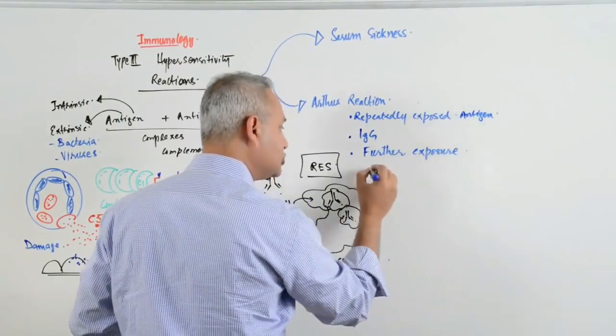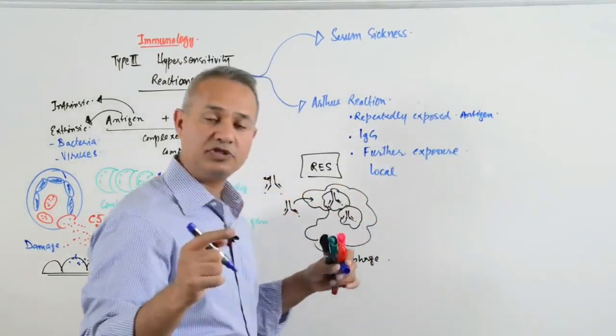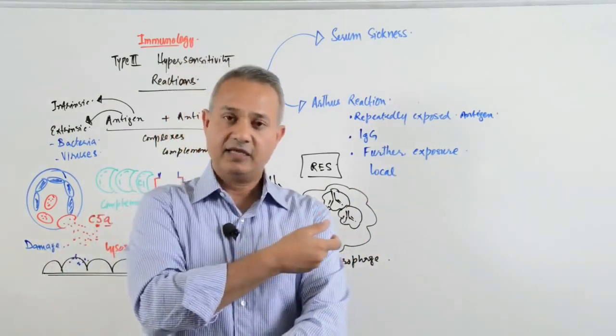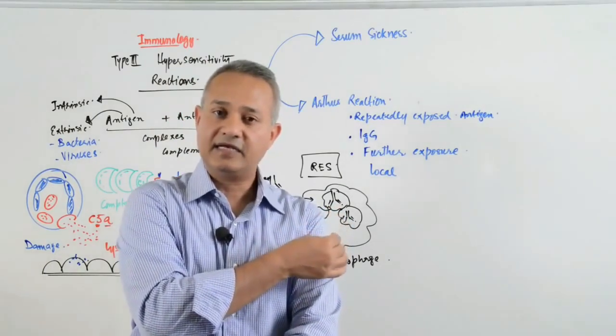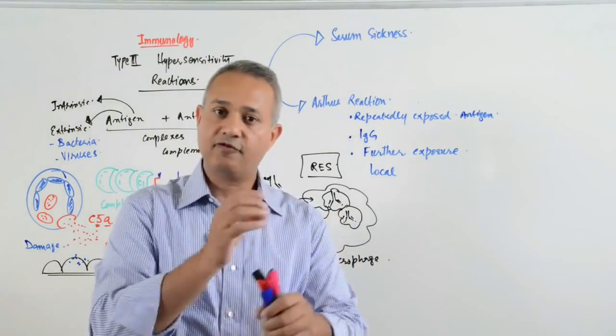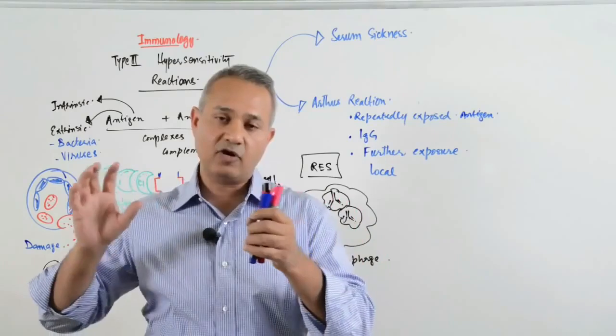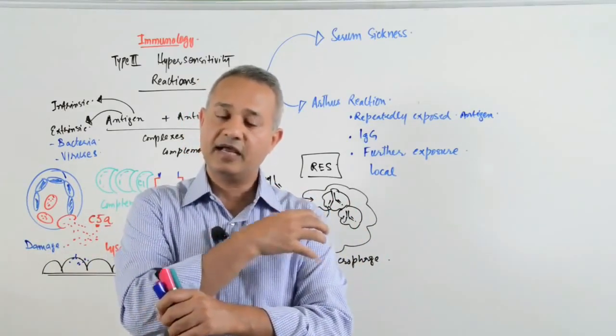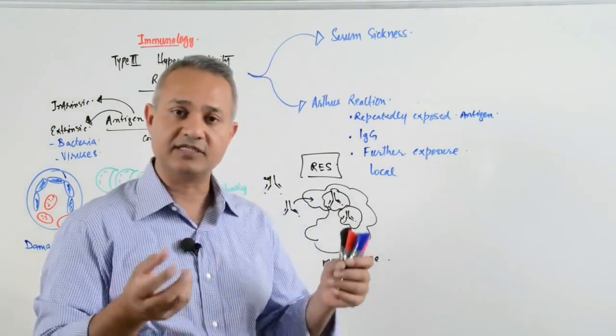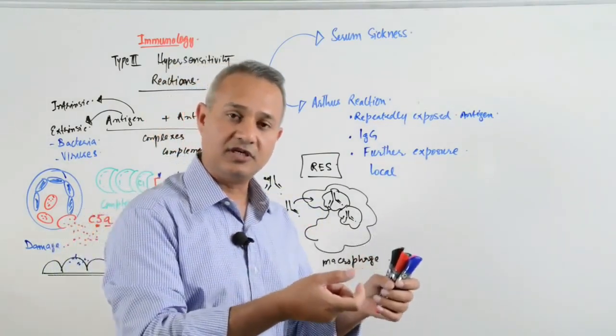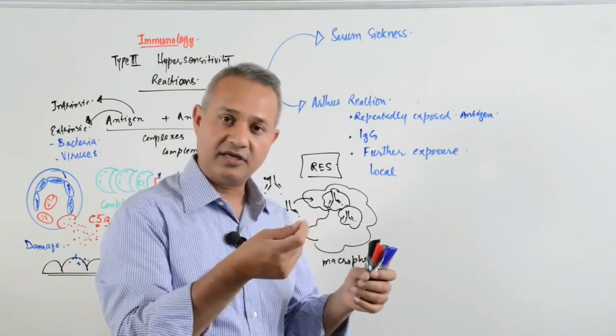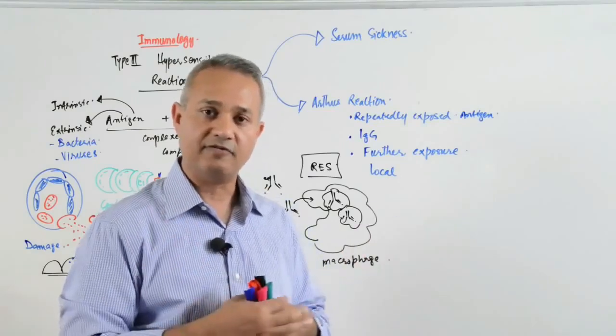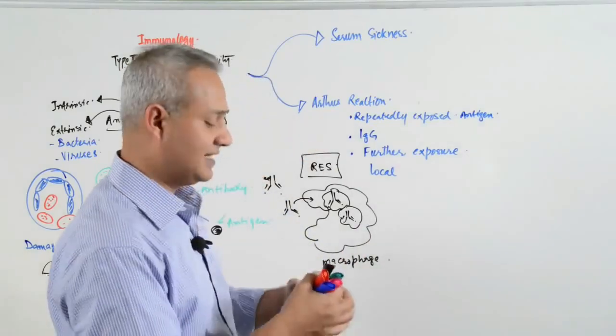That reaction is local. For example, if tetanus or diphtheria antigen is given for vaccination and there was already sensitization, then local hemorrhage and necrosis can occur. This is actually a USMLE question where someone is given an immunization injection and comes back with a sore arm. Arthus reaction occurred.